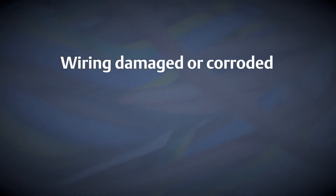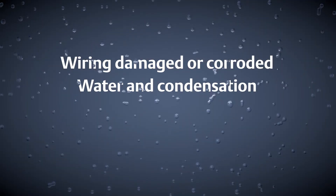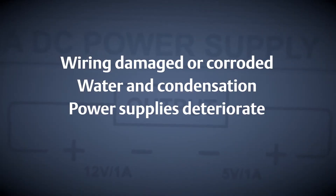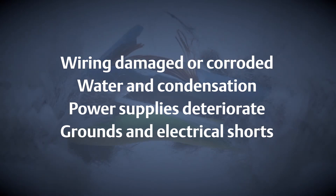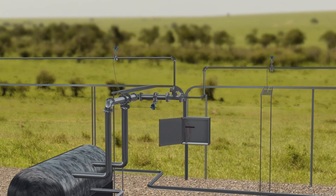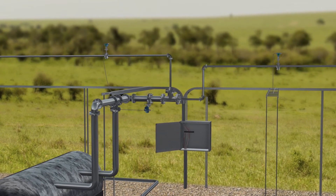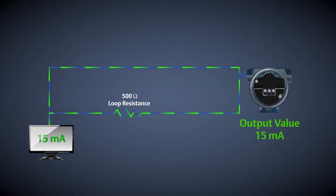What are some of these risks? Wires can become damaged or corroded. Water and condensation can find their way into housings and conduit. Power supplies can deteriorate and become unstable. Grounds and electrical shorts can inadvertently be introduced to the loop. All of these issues can impact the integrity of your 4 to 20 milliamp loop, causing the control room to receive inaccurate measurements and potentially lead to dangerous on-scale failures.